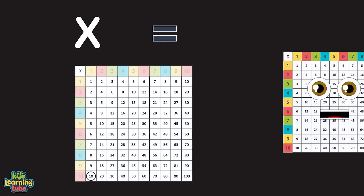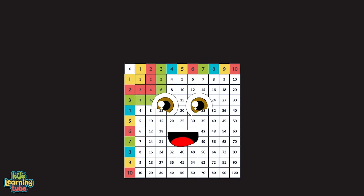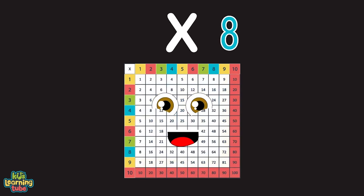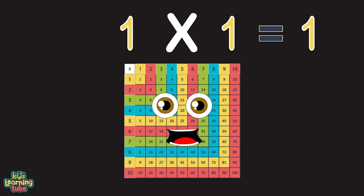When you multiply any number by one, it always equals the same number as when you begun. When you multiply any number by one, it always equals the same number. Let's work an equation. When you multiply any number by one, it always equals the same number as when you begun.